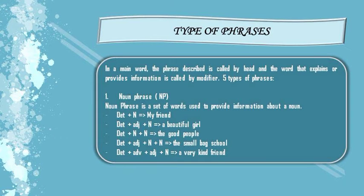Next, I will explain about types of phrases. In the main word, the phrase described is called the head, and the word that explains or provides information is called the modifier. There are five types of phrases.